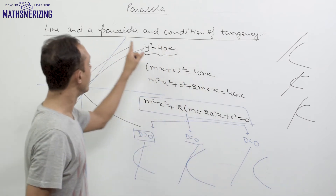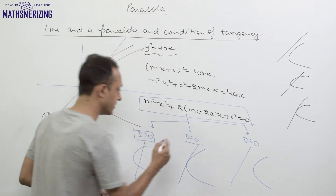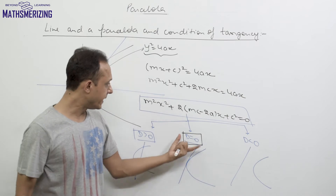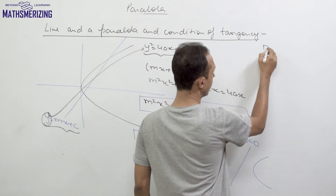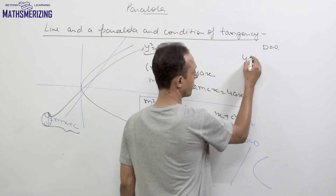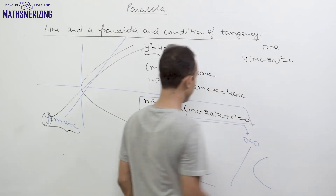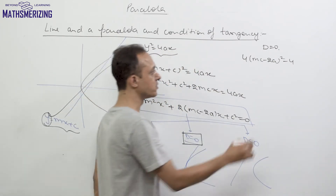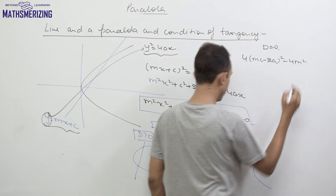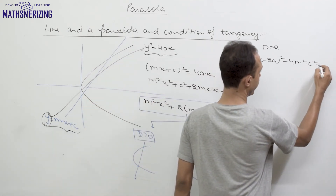Now we need to work out the condition of tangency. For tangency, D must equal 0. Setting D = 0, we write b² − 4ac = 0, which gives [2m(c − 2a)]² − 4 · m² · c² = 0.